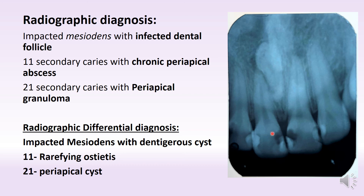And if this expands in the future, and if the central incisor is treated with RCT and this radiolucency around the follicle persists, then it's important to extract this tooth and do a biopsy of the follicle to test for the presence of a dentigerous cyst. And of course it should be followed by enucleation of the cyst.